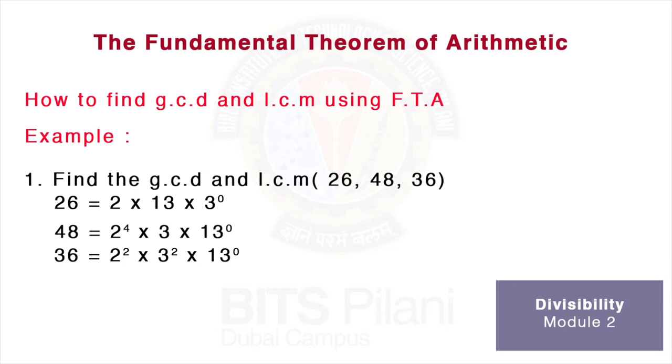Next, to find the GCD, we take the product of all the primes with the smallest power. We can see that 2 has the smallest power 1, and 3 has the smallest power 0. 13 has the smallest power 0. Multiply them, we get the GCD is 2.